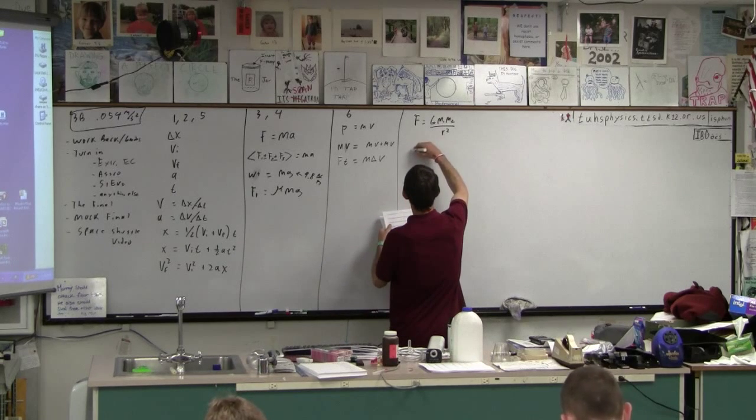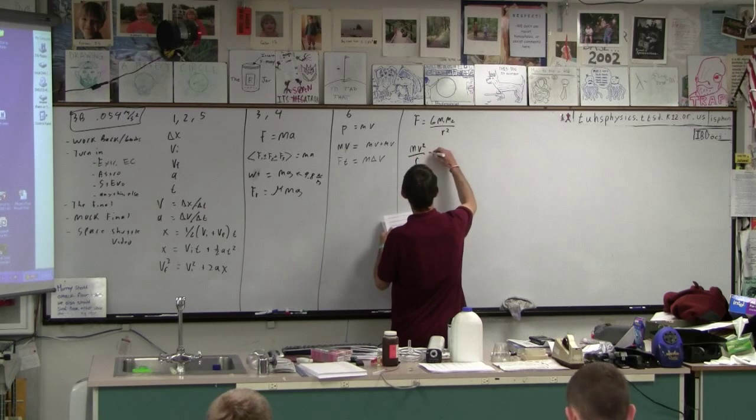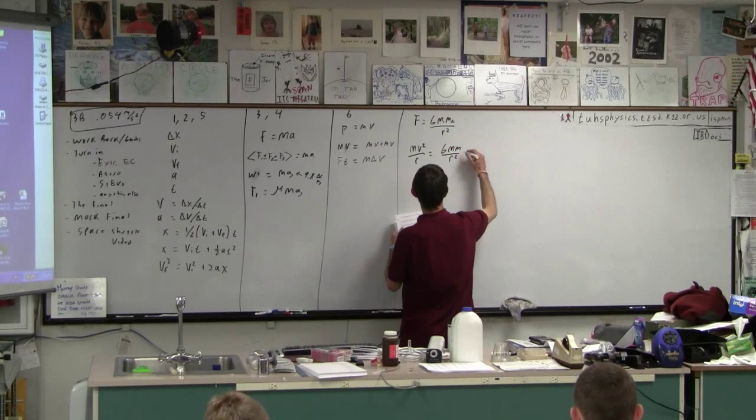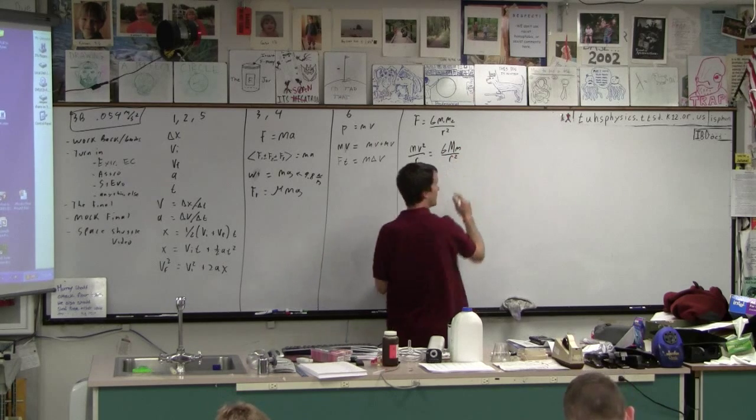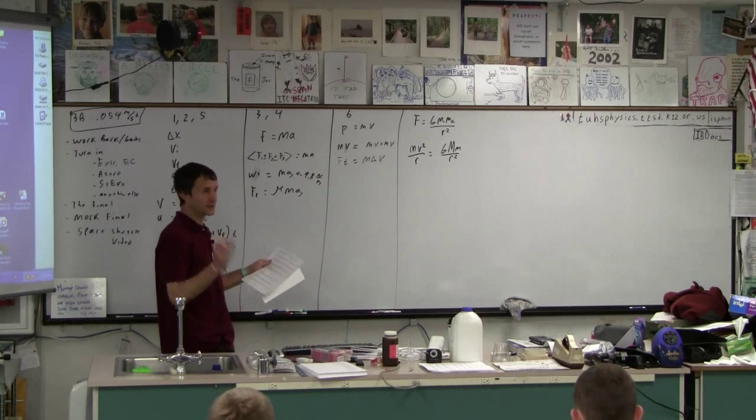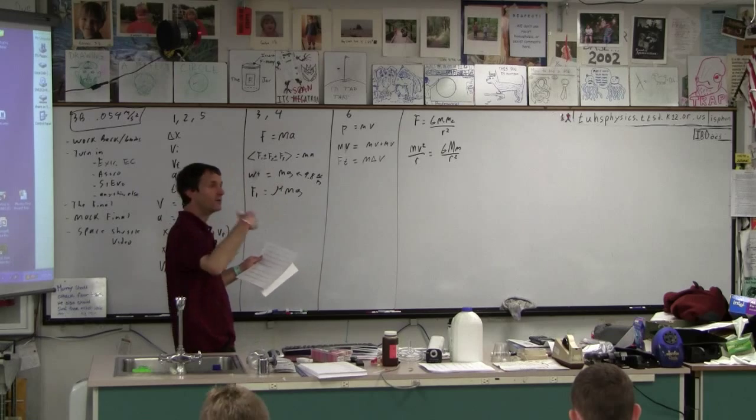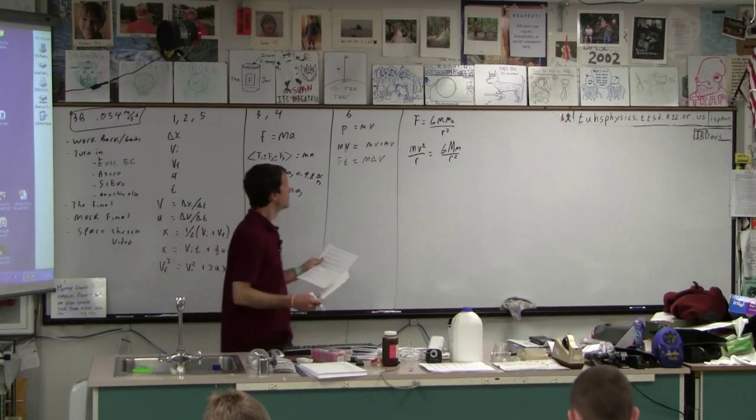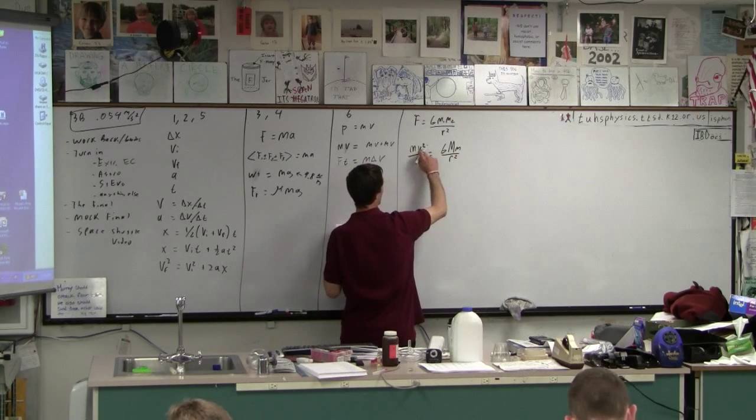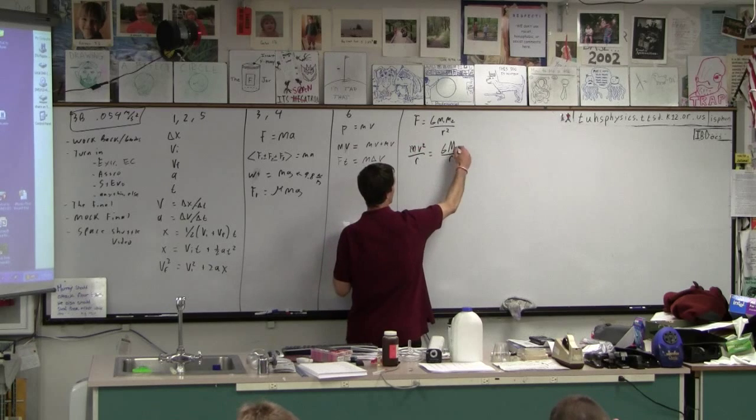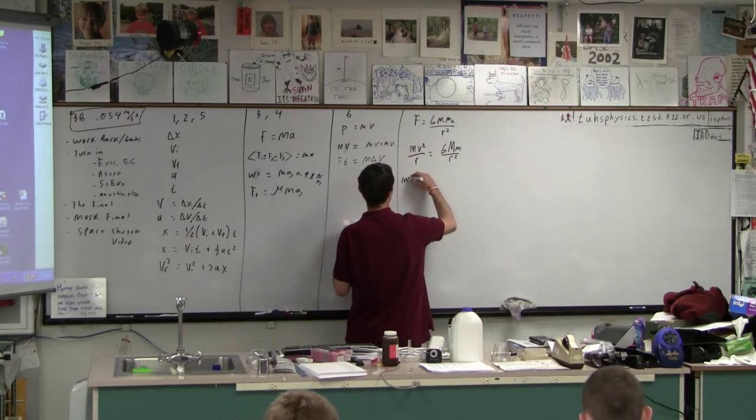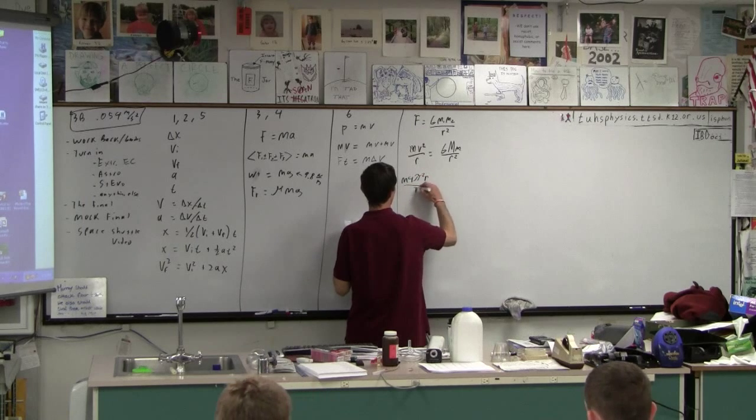So there's Mv squared over R is Gmm over R squared. And this is, one of these masses is the central body mass. Remember that if I give you a planet and a moon, that it's the small mass that's going to cancel. The moon is both going around the planet and also accelerating. It's one of these masses, and it's the mass that has that velocity. So that mass cancels. And then you could also do M4 pi squared R over T squared.